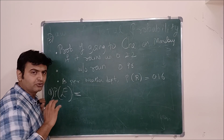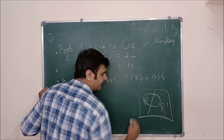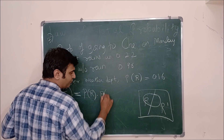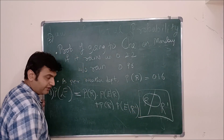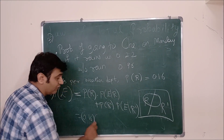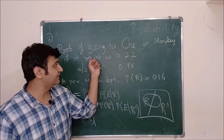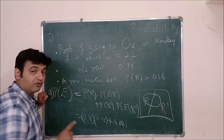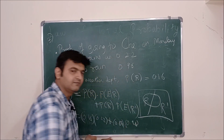The sample space is divided by whether it rains (R) or not (R'). P(E) = P(R)·P(E|R) + P(R')·P(E|R'). Probability it rains: 0.16. Probability Ishan goes given it rains: 0.22. Probability it does not rain: 1 − 0.16 = 0.84. Probability Ishan goes given it does not rain: 0.96. So P(E) = 0.16×0.22 + 0.84×0.96. As simple as that.